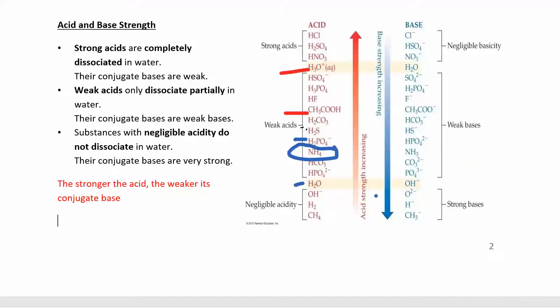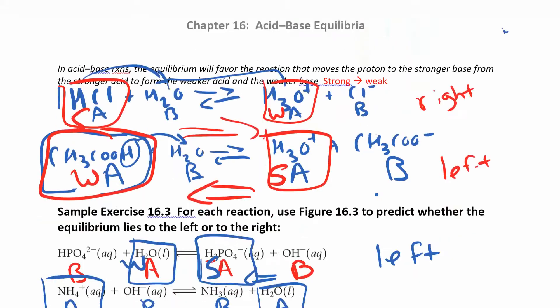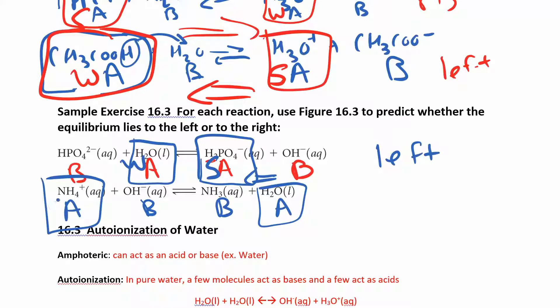So NH4 plus is the stronger acid. So this is the stronger one. This is the weaker one. So the reaction is going to go from strong to weak. So this time it lies to the right.